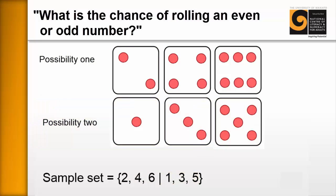And only half of these can be odd, 1, 3 and 5. So we have a total sample set of six with a possibility of three being either even or odd. So the answer is 3 6th. It's a 3 6th chance. Or we can convert that to a half.